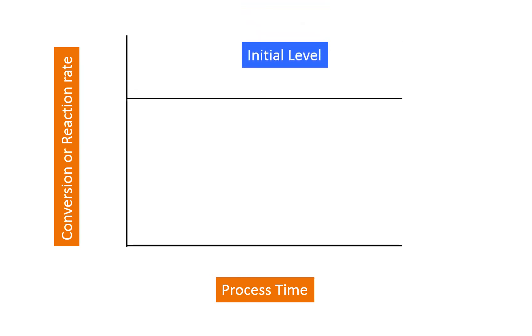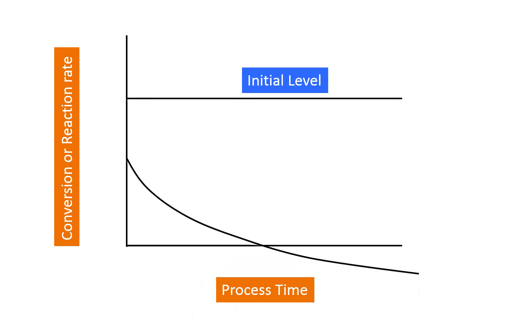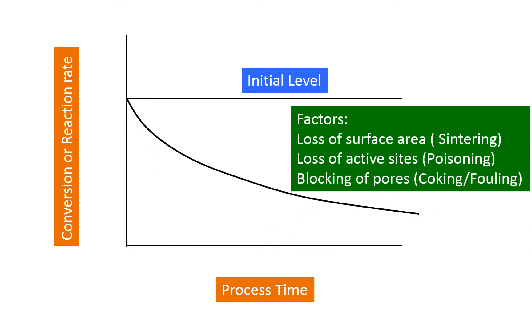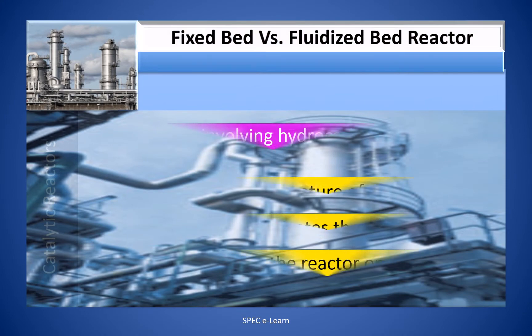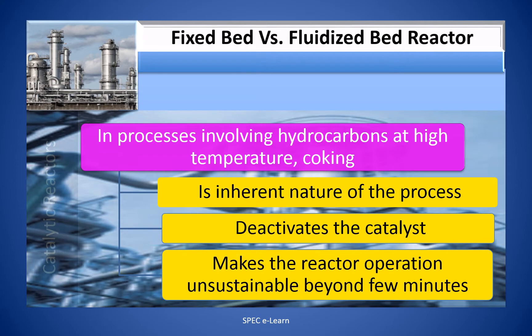This figure illustrates how the conversion or reaction rate decreases with time due to catalytic deactivation. From the initial level, there is a gradual decline in conversion as the deactivation proceeds. In processes involving hydrocarbons at high temperature, coking is the inherent nature of the process. It deactivates the catalyst and makes the reactor operation unsustainable beyond a few minutes, requiring the reactor to be shut down.